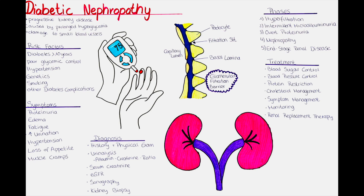Uncontrolled hypertension is also a significant risk factor for the development and progression of diabetic nephropathy. Hypertension can further strain the already compromised kidneys and accelerate kidney damage. A family history of diabetic nephropathy or genetic predisposition to kidney disease can also increase the risk of developing this complication.